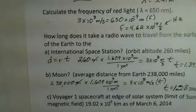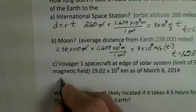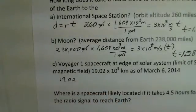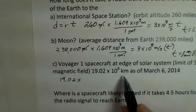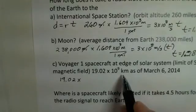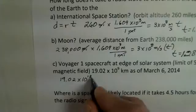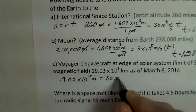So let's calculate the time for the signal. Again, distance equals rate times time. So our distance. We don't have to do quite as much conversion. 19.02. We have 10 to the 9th kilometers. We want meters. Well, there's a thousand meters in a kilometer. So that's another 10 to the 3rd. So 10 to the 12th meters. That's our distance.